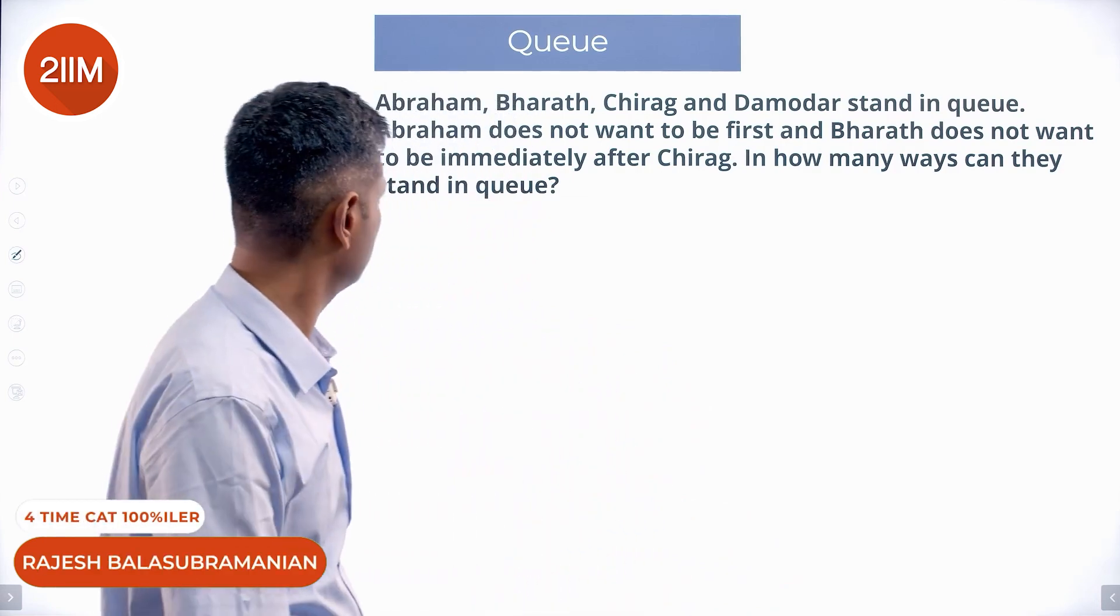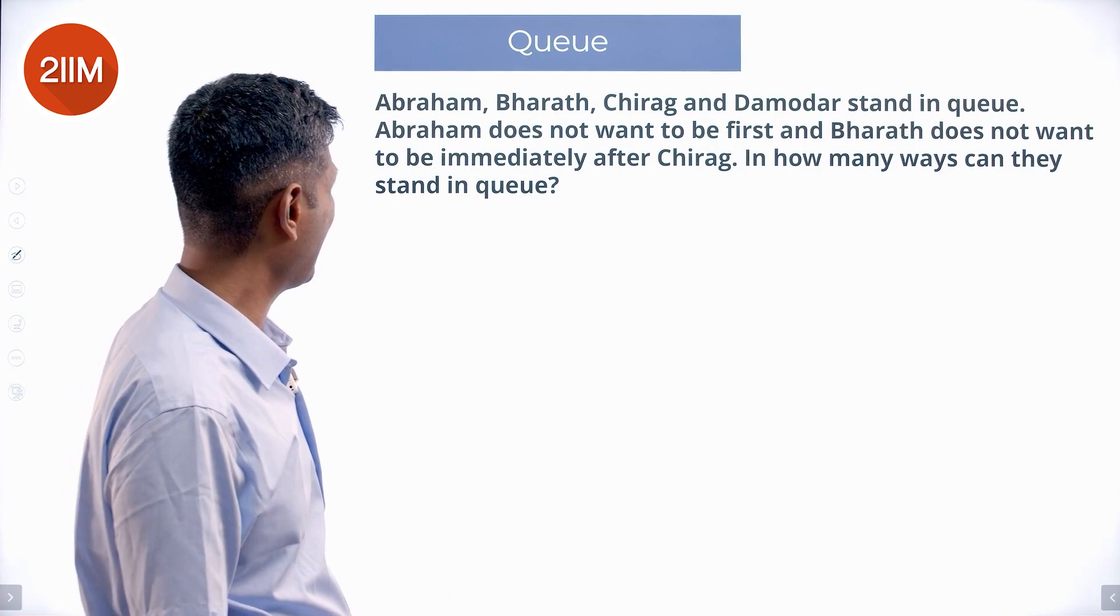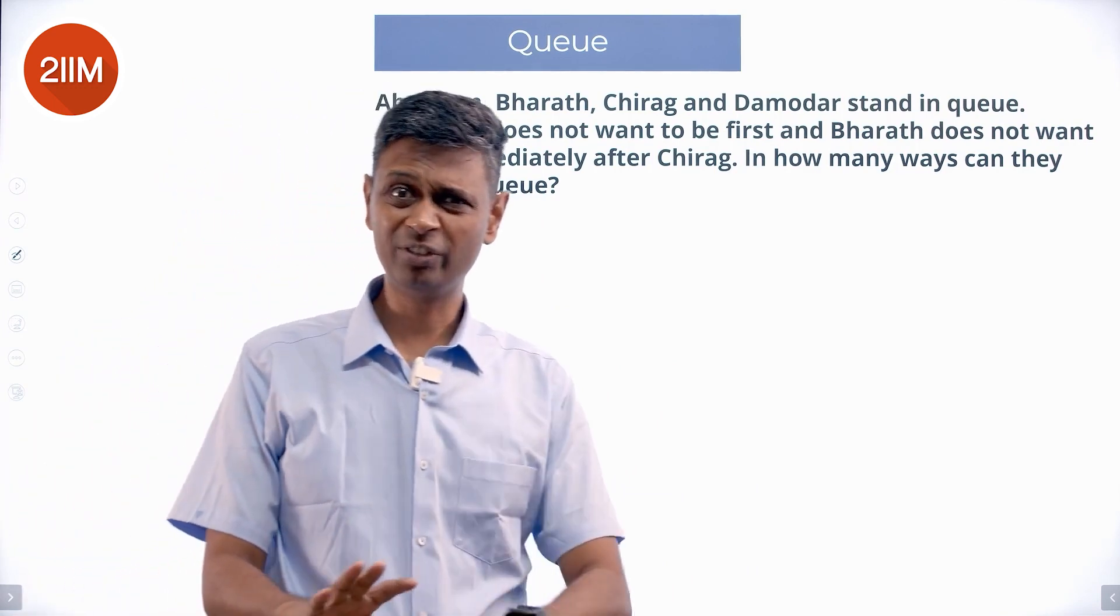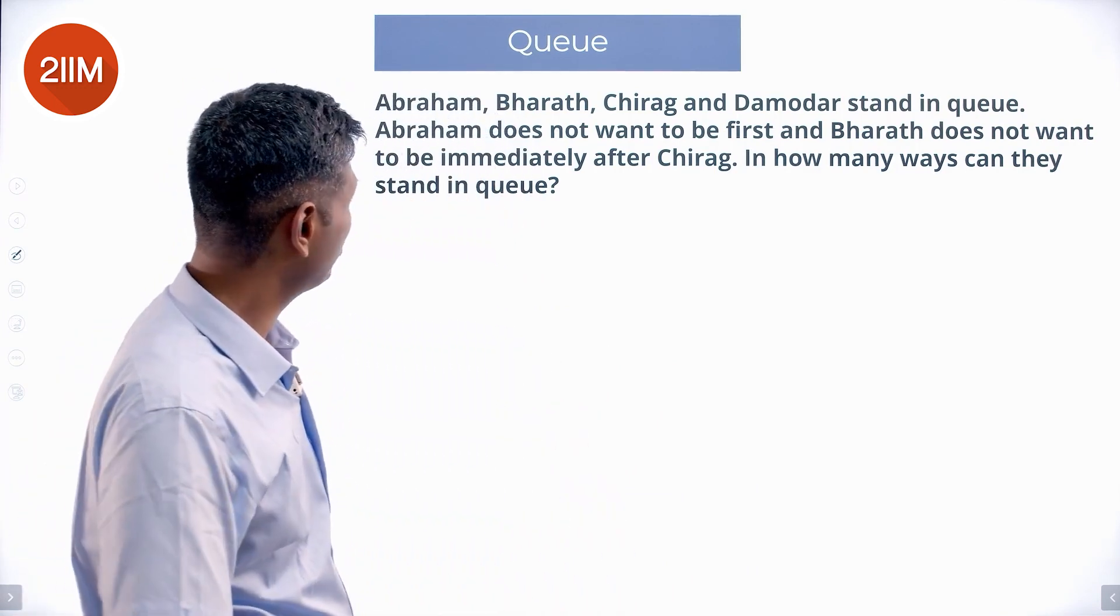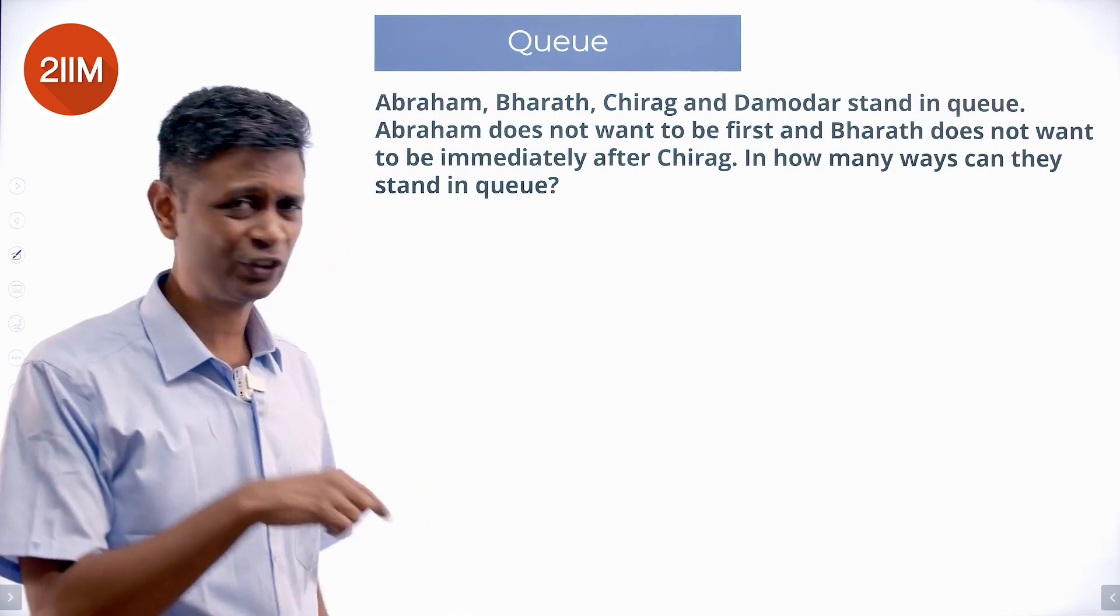Let's go to the next question. Abraham, Bharat, Chirag and Damodar stand in queue. I'm going to make it A B C D from now on. Abraham does not want to be first and Bharat does not want to be immediately after Chirag.